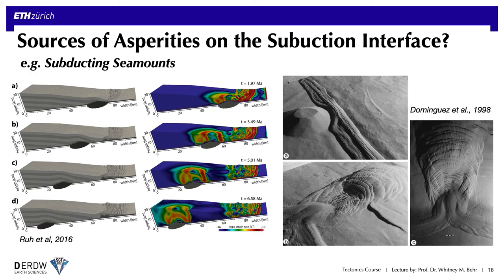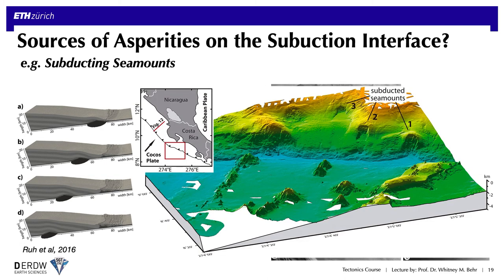One intuitive example of asperities is subducting seamounts or other topographic features on the downgoing plate. Numerical modeling and analog sandbox modeling show that seamounts generate large stress concentrations on the interface around them as the subducting slab drags them down, producing stress shadows in front and in their wakes. The topographic patterns created in models resemble those observed in bathymetric data from active subduction zones, such as the Costa Rica subduction zone.